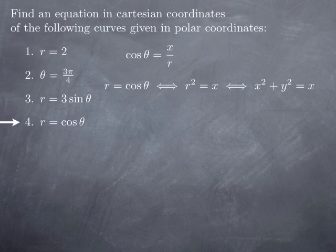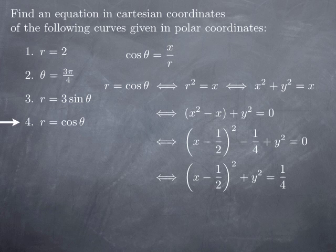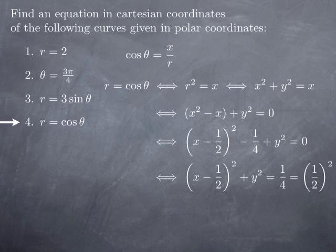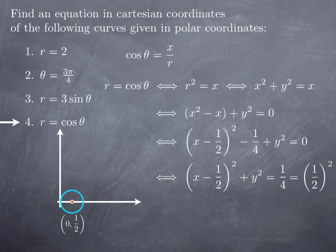Just like in the previous case, we take x to the left and complete the square in x²−x: we get (x−1/2)²−1/4, giving the Cartesian equation (x−1/2)²+y²=1/4=(1/2)². This is the equation of a circle centered at (1/2, 0), which is centered on the x-axis and tangent to the y-axis.